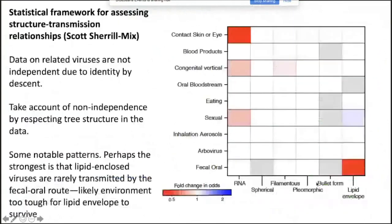Scott Sherrill-Mix worked out an interesting statistical framework for this. It was a hard problem statistically because viruses may be related by descent and are not fully independent. So the analysis took place on a phylogenetic tree, respecting the non-independence in the structure. And we saw some quite notable patterns.